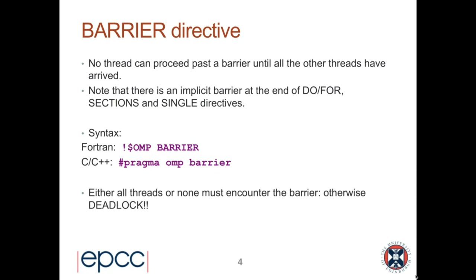The syntax is: Fortran uses `!$omp barrier`, C/C++ uses `#pragma omp barrier`, with no associated code block. One important rule: either all threads in the parallel region or none of them must encounter the barrier, otherwise it results in deadlock. The barrier expects all threads to reach that point before any can proceed. If complex control flow means some threads never reach the barrier, the threads that do will wait forever. So with complicated control flow, you must ensure either all or none encounter the barrier.